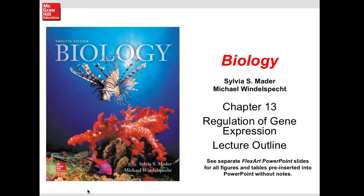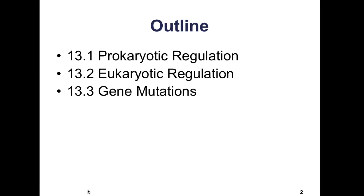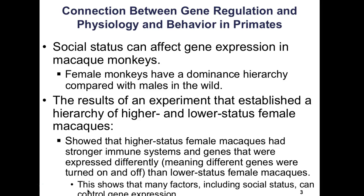Chapter 13: Regulation of Gene Expression. This is part of the molecular biology portion of AP Bio, and it will lead into biotechnology. There are three sections: 13.1 deals with prokaryotic regulation, 13.2 is eukaryotic gene regulation, and 13.3 covers gene mutations in slightly more detail. There is a connection with the chapter you can read at the beginning of Chapter 13.